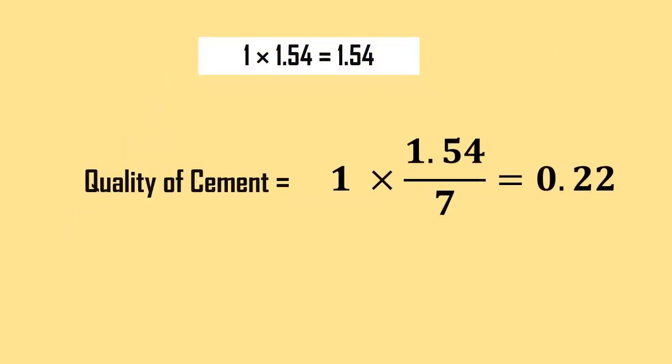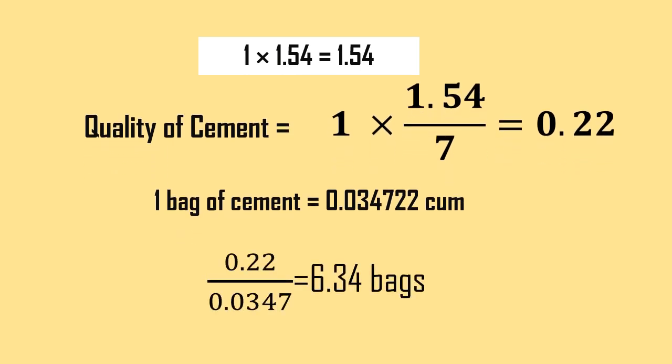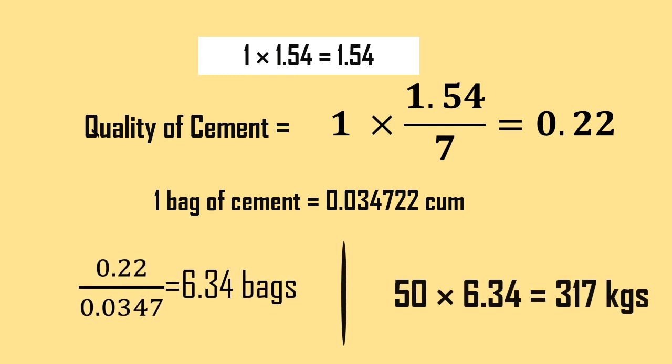The quantity of cement is calculated as 1 × 1.54 divided by 7 (total ratio), which equals 0.22 cubic meters. Since one bag of cement is 0.034722 cubic meters, we get 0.22 ÷ 0.0347 = 6.34 bags, that is 50 × 6.34 = 317 kilograms.